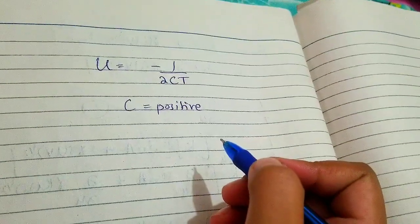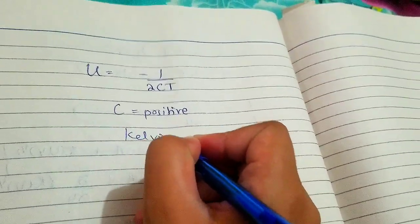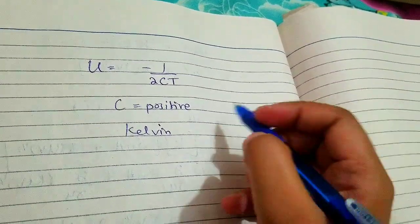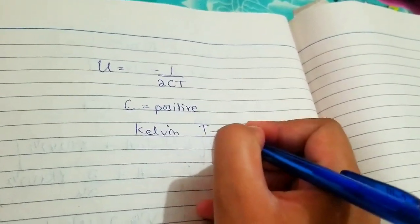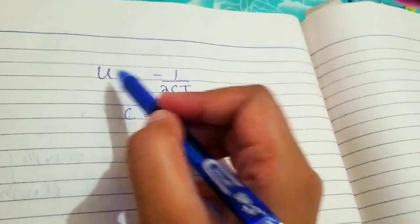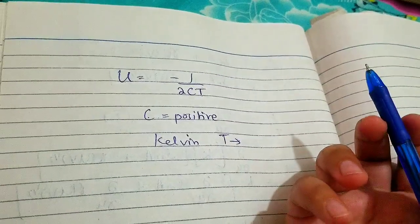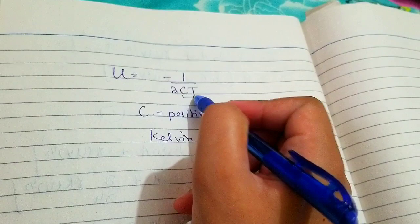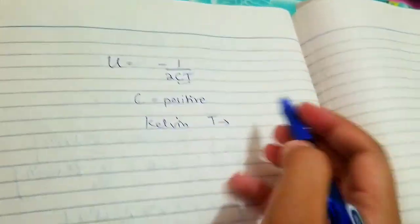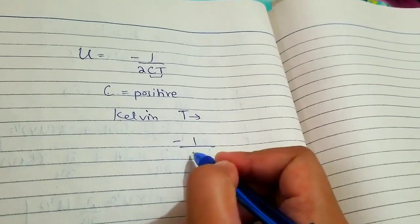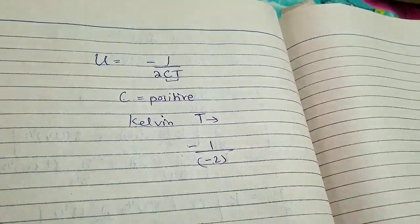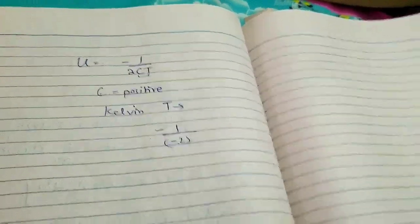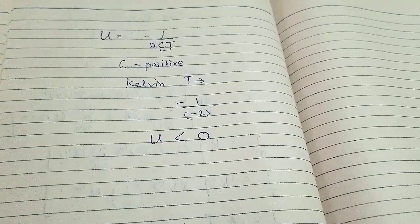Remember that C is a positive constant — C is always positive. Temperature is always positive and greater than 0. Unlike the Celsius or Fahrenheit scales, absolute temperature is never negative. So if C is positive and T is always positive, then both are positive, and therefore U is always less than 0 — U will always be negative. The product 2cT is always positive, so negative one divided by a positive number is always negative.